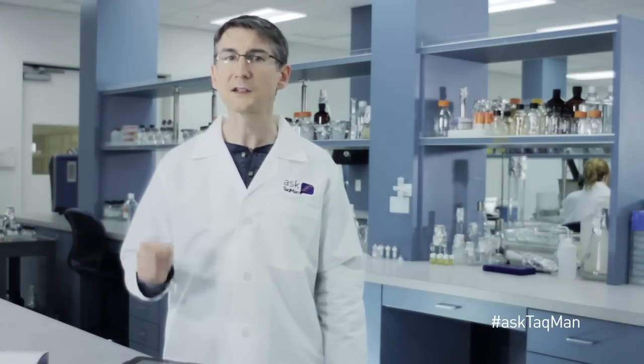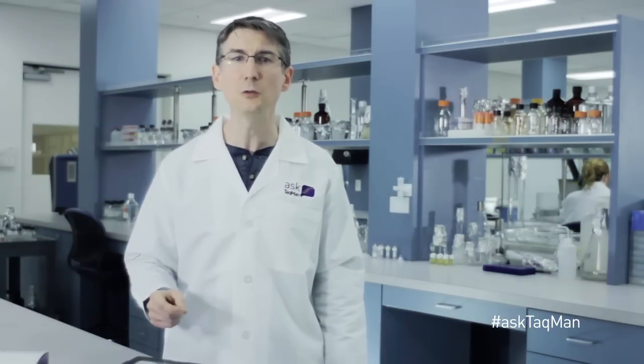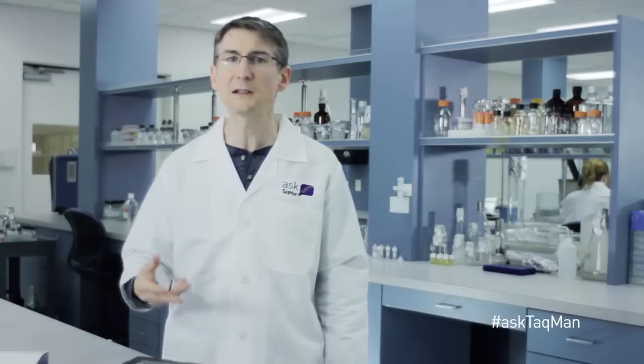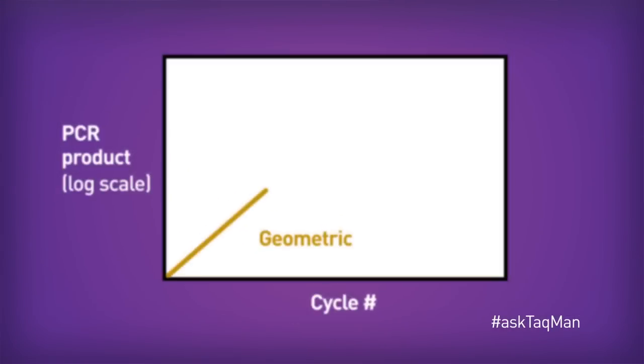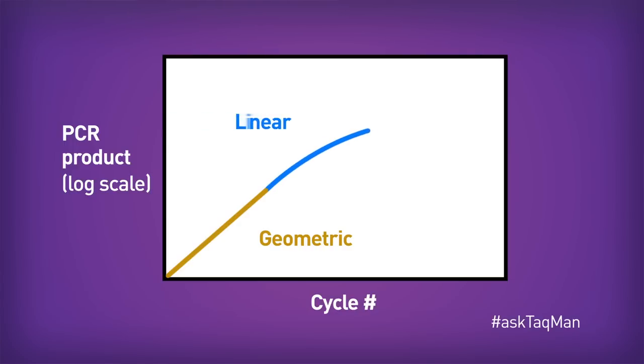Unfortunately, this doubling doesn't go on forever. At some point, the reagents in the tube—primers, DNTPs, and so on—start to run low. As a result, the reaction slows down. We call this the linear phase.